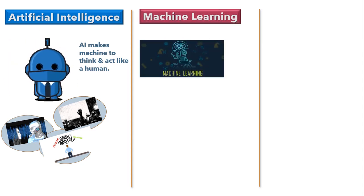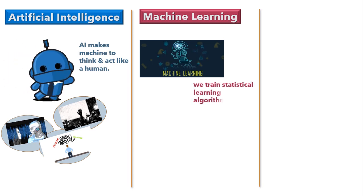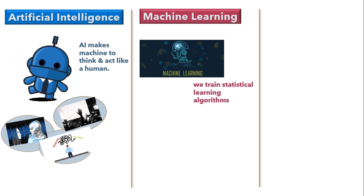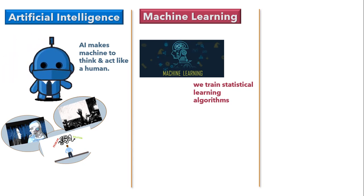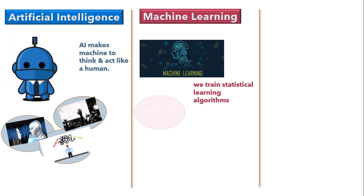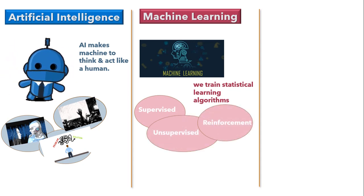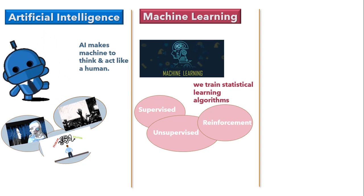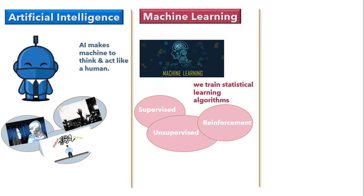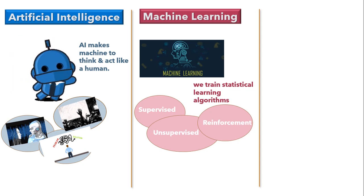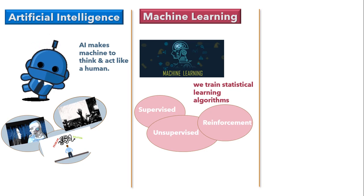AI tends to eliminate human intervention. When we talk about machine learning, it is a subset of artificial intelligence where we train statistical learning algorithms such that they can learn how to make decisions. Machine learning is further divided into three parts: supervised learning, unsupervised learning, and reinforcement learning. I have already uploaded a machine learning tutorial playlist on my YouTube channel — I will share the link in the description.